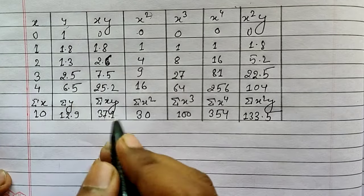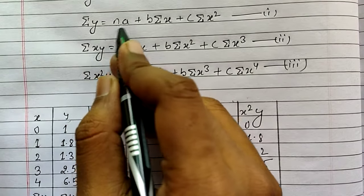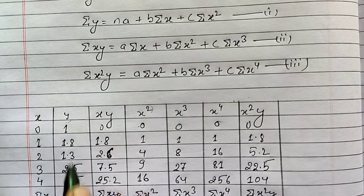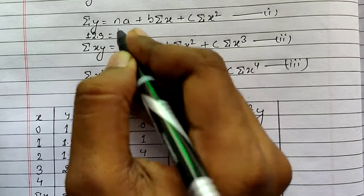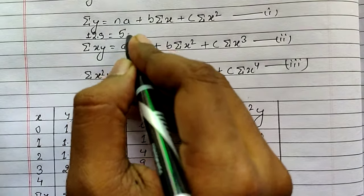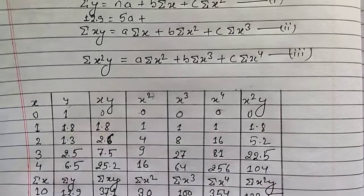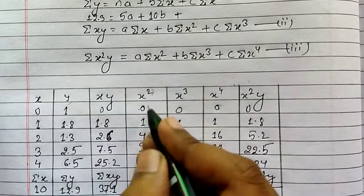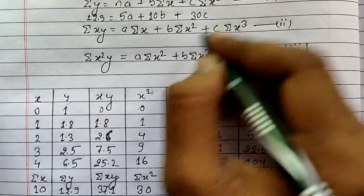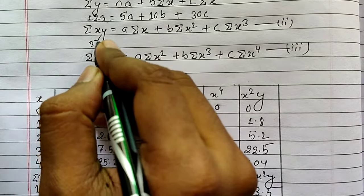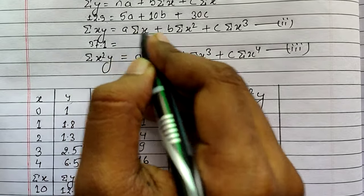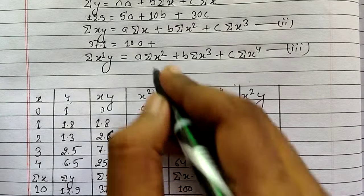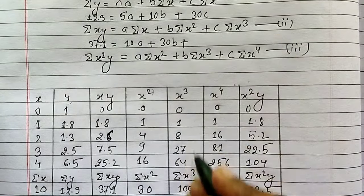Substituting into the first equation: 12.9 equals 5a plus 10b plus 30c. For the second equation: 37.1 equals 10a plus 30b plus 100c. For the third equation: summation x squared y is 133.5, so 133.5 equals 30a plus 100b plus 354c.